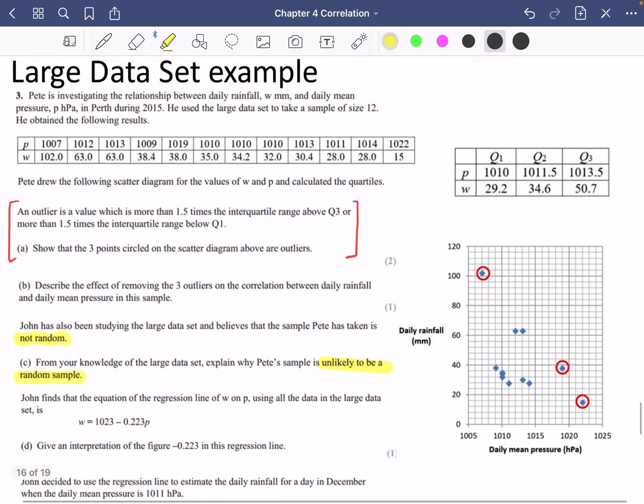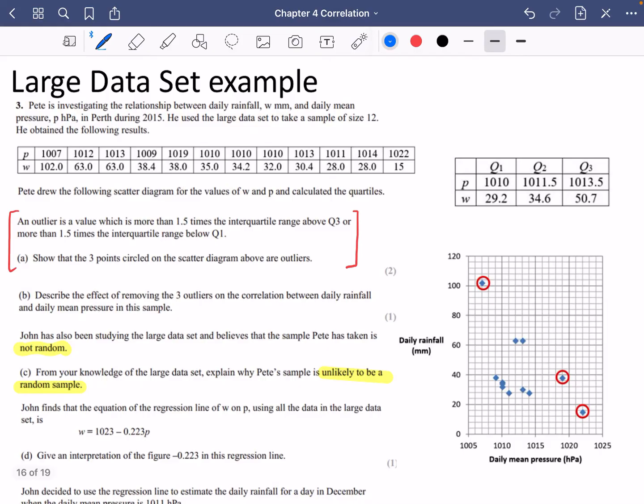Now remember it's Perth. A couple of things you should think about Perth is that Perth is in Australia and in this particular area of Perth it's going to be not a particularly rainy place in Australia. In Australia there is not much rain and if you know the large data set it's often going to be a lot of days where there is no rain but if you have a look at this for the rainfall, the rainfall every single day is raining which doesn't feel like it's going to be a random selection of days in 2015.